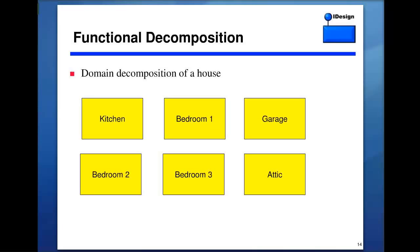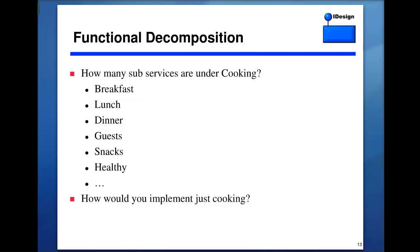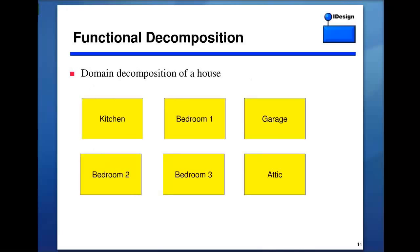You would never build a house this way, yet you're trying to build a software system this way. What if you want to do some cooking in the garage or outside? You're forced to duplicate. Cooking is almost never a single functionality — cooking breakfast is very different from cooking lunch or dinner. How would you implement just cooking? It doesn't make sense building a house this way — why would it make sense building a software system this way?